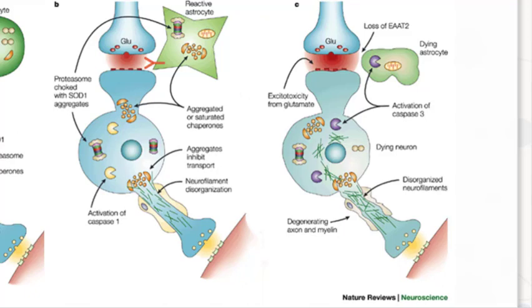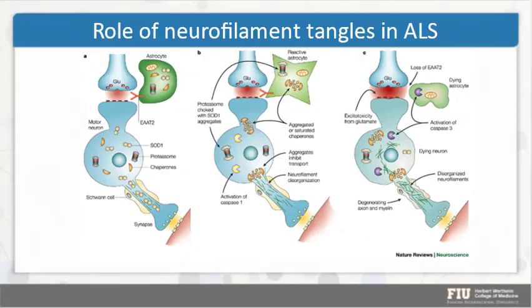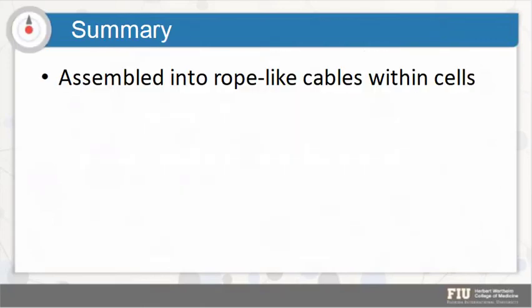This was just one image that we decided to make into three different parts, animate it, and synchronize it with the narrator's words, then adding annotations. As you can see, this is the whole image itself. To summarize: intermediate filaments.